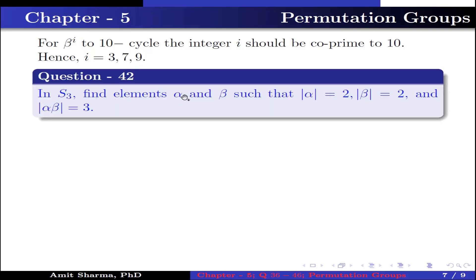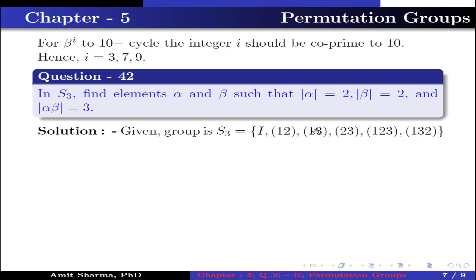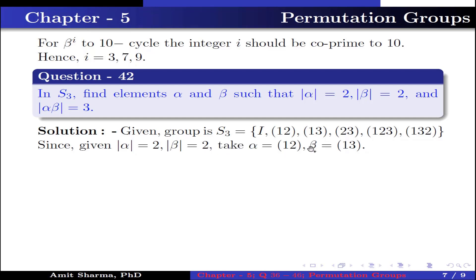Question number 42. In S3, find elements alpha and beta such that order of alpha is 2, order of beta is 2, and order of alpha∘beta is 3. S3 contains the elements identity, (1,2), (1,3), (2,3), (1,2,3), and (1,3,2). Since order of alpha is 2 and order of beta is 2, take alpha = (1,2) and beta = (1,3), both being 2-cycle permutations. Then the product alpha∘beta = (1,2)∘(1,3) = (1,3,2) because 1 maps to 3, 3 maps to 2, and 2 maps to 1. This is a 3-cycle permutation, so the order of alpha∘beta is 3.